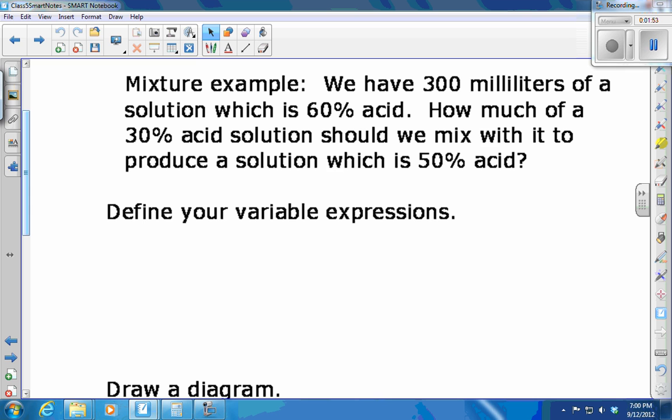A mixture problem - this is like a classic word problem. If you have 300 milliliters of a solution that's 60% acid, and then you have another big jug of a 30% acid solution, how much of the 30% should you mix with the 60% to create a 50% solution? First we want to define our variables. You do this based on the question. How much 30% acid solution? So x will be the amount of 30% solution needed.